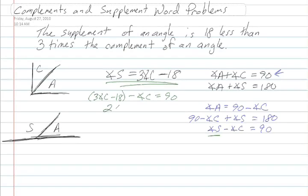Then twice angle C minus 18 is equal to 90 by combining like terms. And twice angle C is equal to 180 degrees. So angle C is 54 degrees.